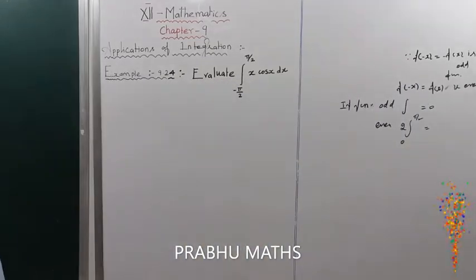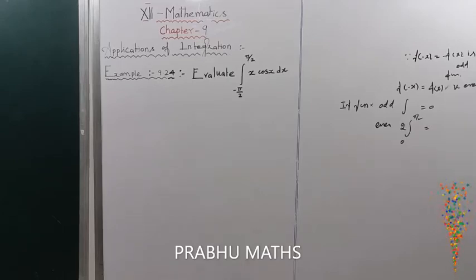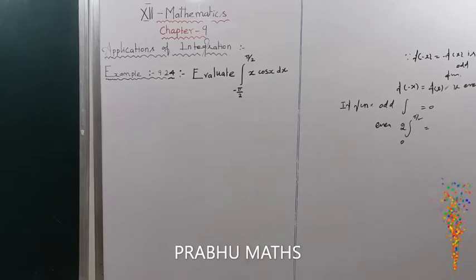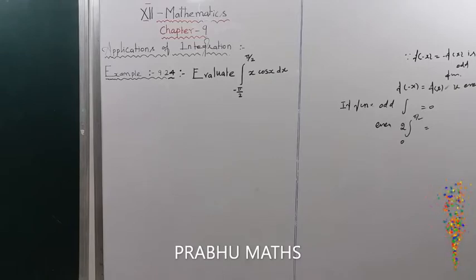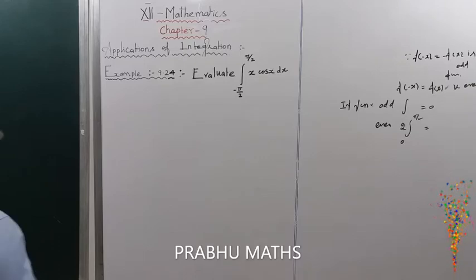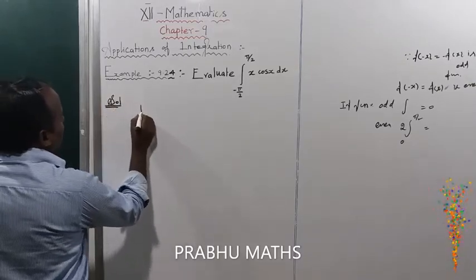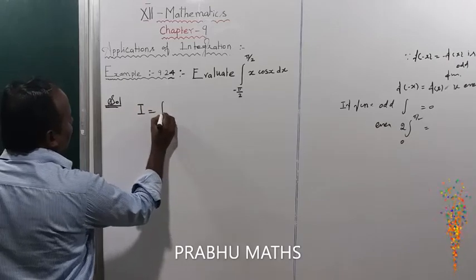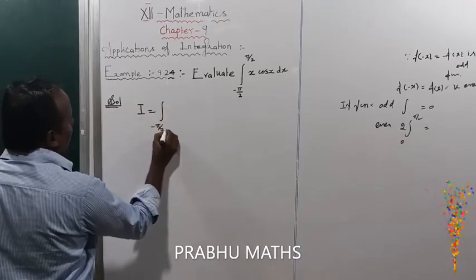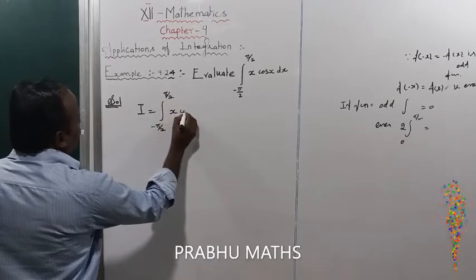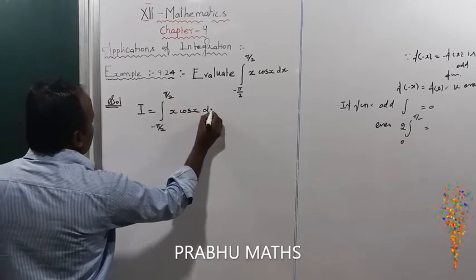We already studied even and odd functions in 11th standard. For an odd function, f(-x) equals minus f(x) and the integral is 0. For an even function, the result is 2 times the integral from 0 to some value. Here, I is equal to the integral from minus pi/2 to plus pi/2 of x·cos(x)dx.